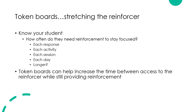Token boards help stretch the reinforcer. You need to know your individual — how often do they need to be reinforced to stay focused? Do they need to be reinforced after every single response? In which case, I suggest you choose a really small reinforcer. Chocolate sprinkles work well — you can give somebody 50 chocolate sprinkles and they've still only had a tablespoon full. You're going to guard against satiation at that point.